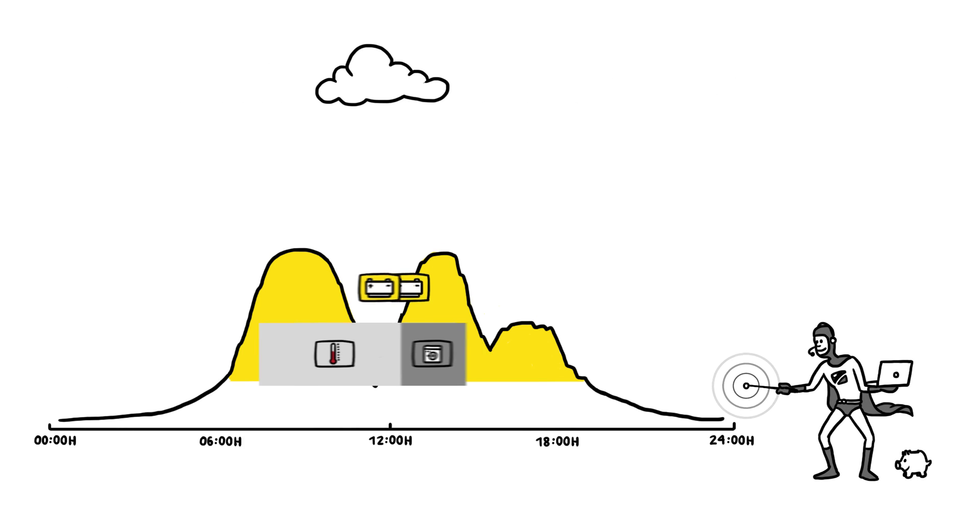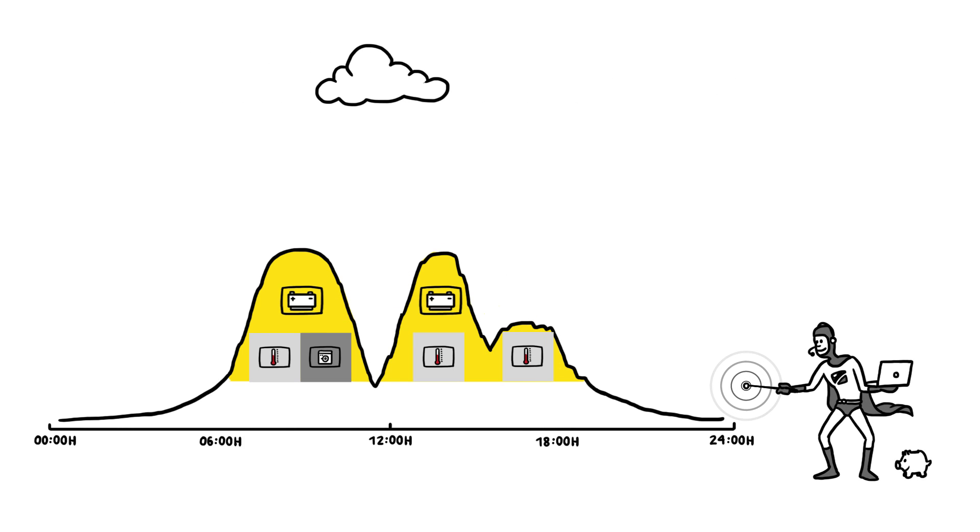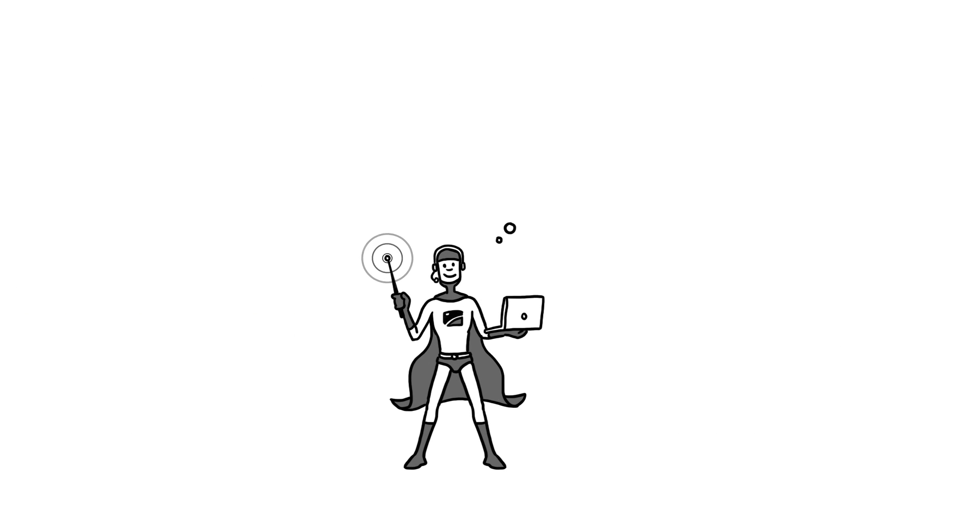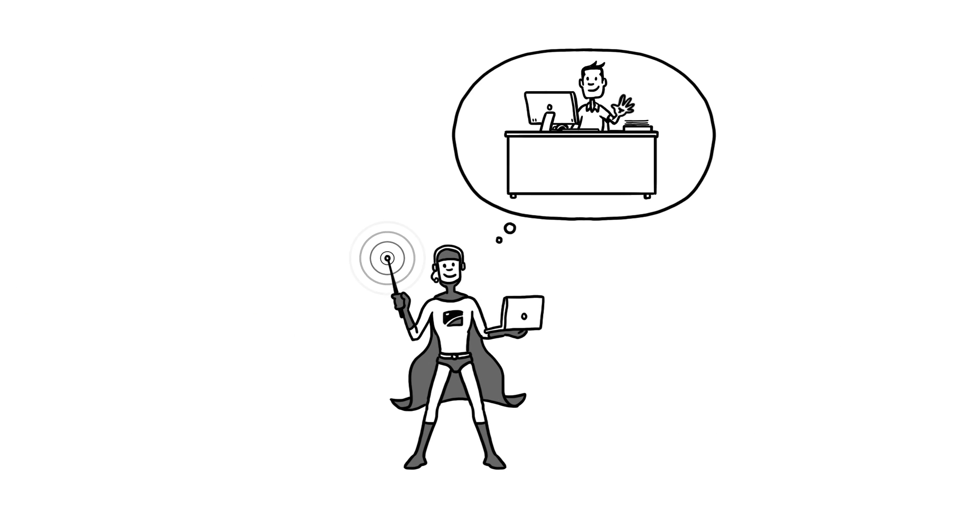And what happens if the weather suddenly changes? No problem. The energy manager changes its plans, and if necessary, falls back on the house's own storage system in the utility grid. All this happens while Paul is out.